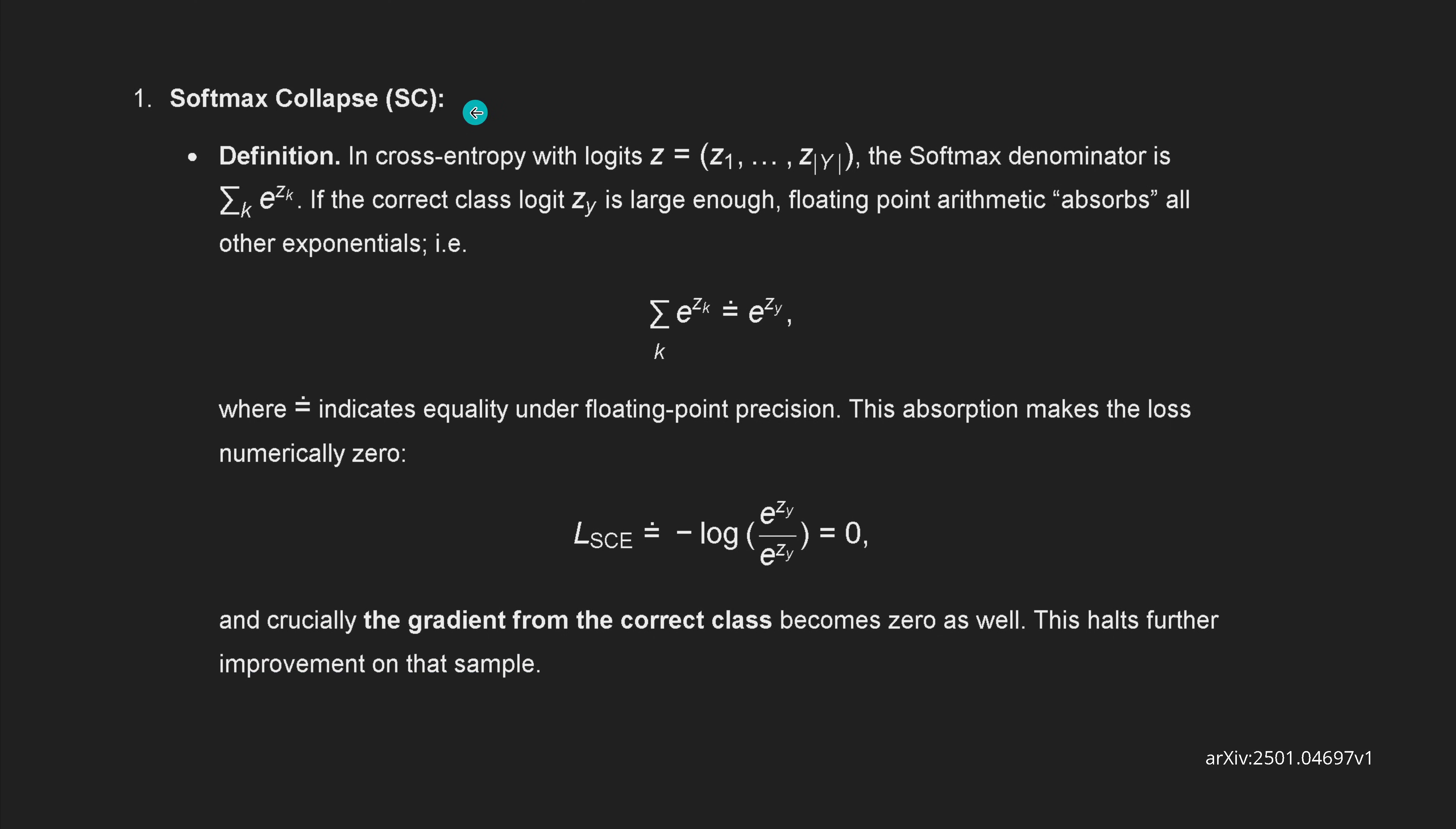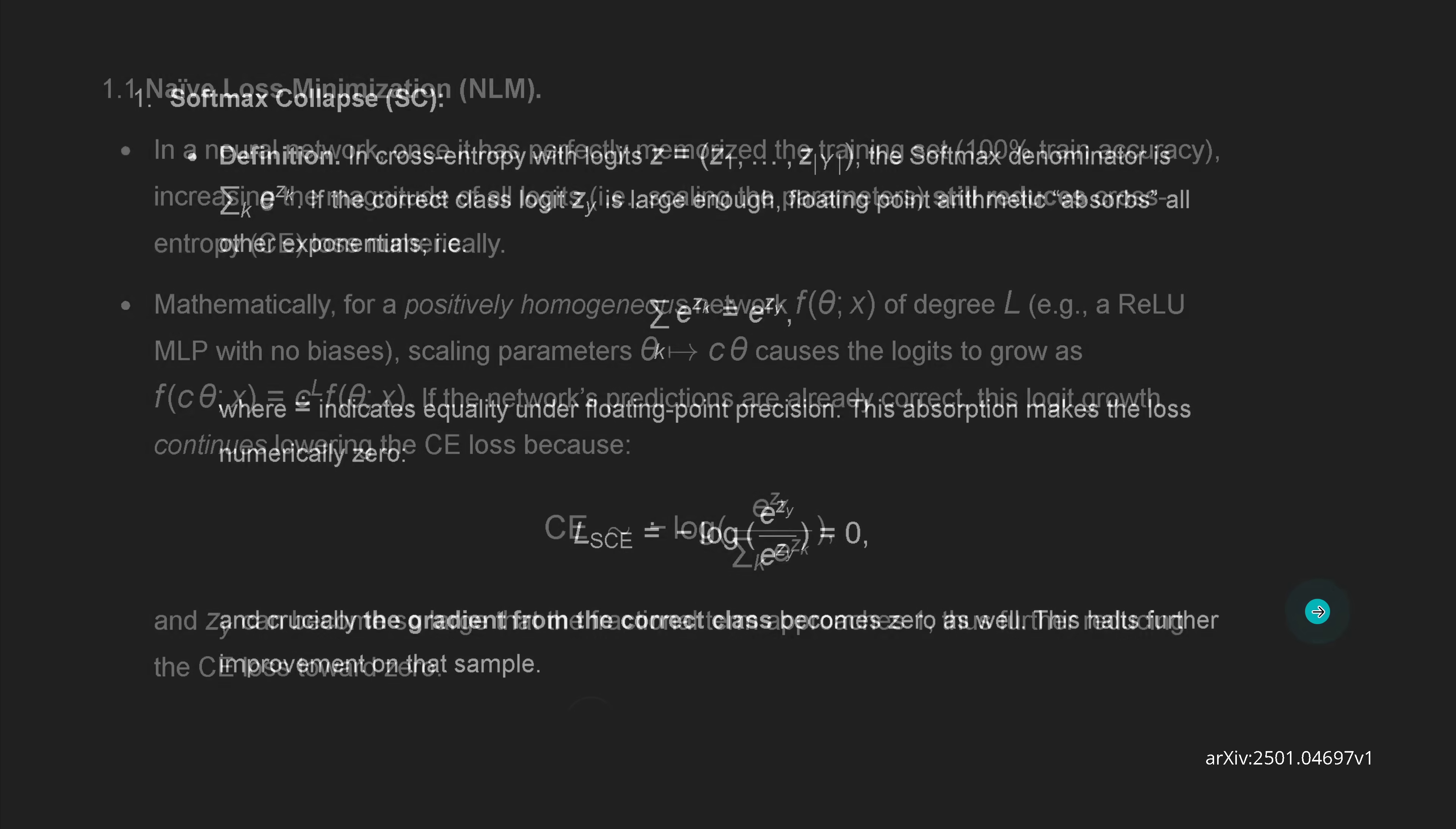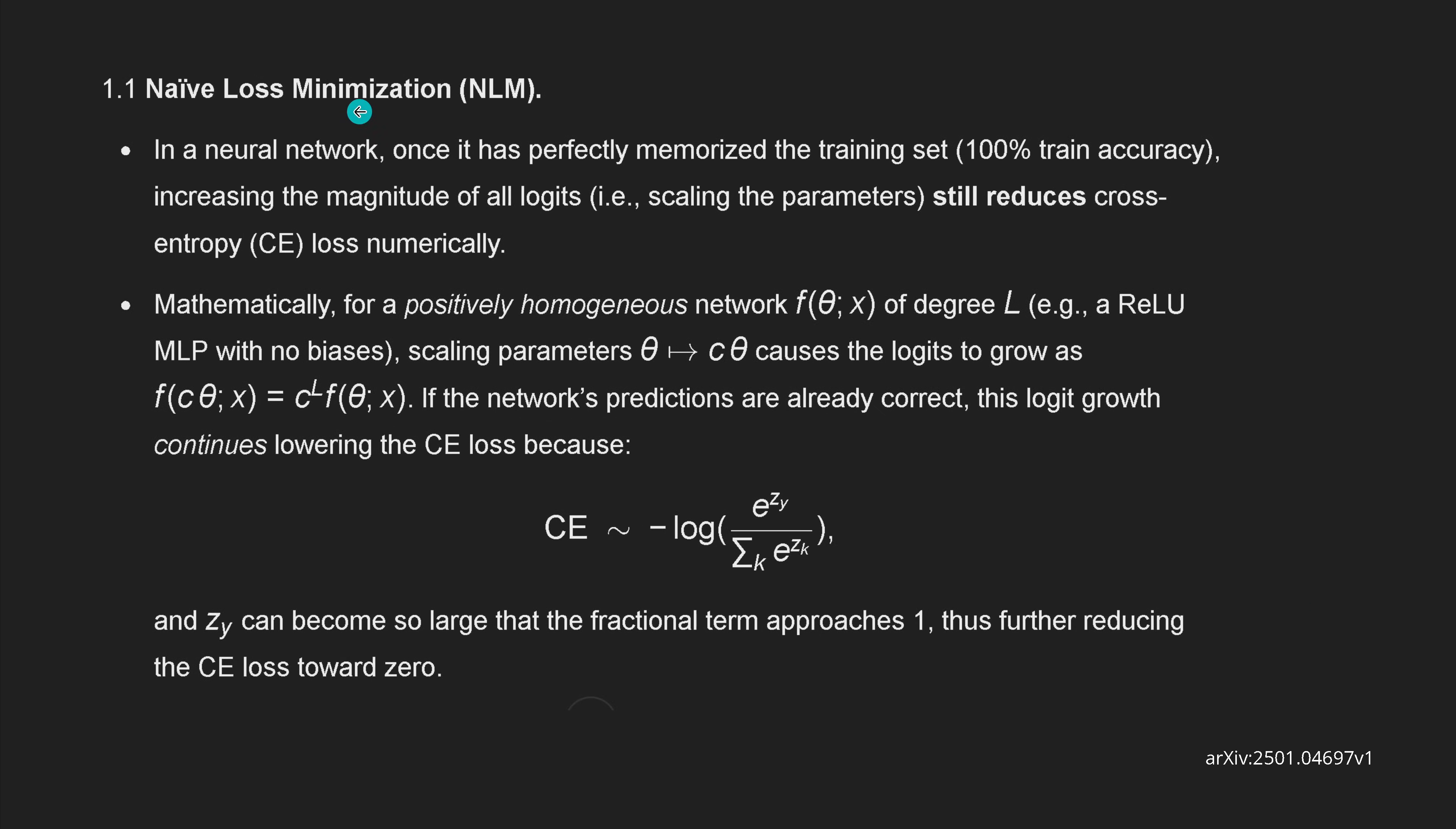I just need a little tiny bit of mathematics, the softmax collapse from last one, the cross-entropy with our logits, and actually the gradient from the class becomes zero as well. And the second part that you have to know was this naive loss minimization direction that is taking place, and I showed you here that the positively homogeneous network, if we have this function f that describes our network and is dependent on the parameter theta with a particular degree L, we have here a scaling of the parameter, and this goes in a way causes the logit to grow here.